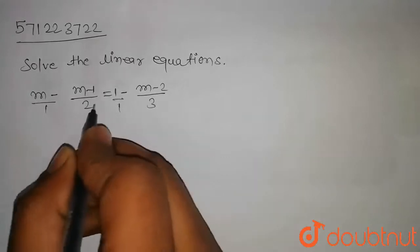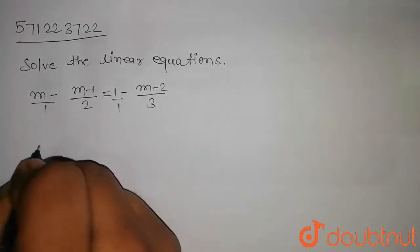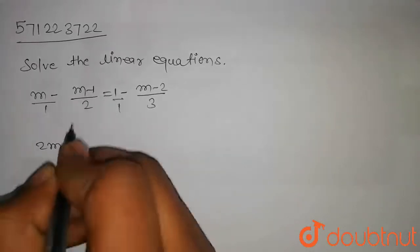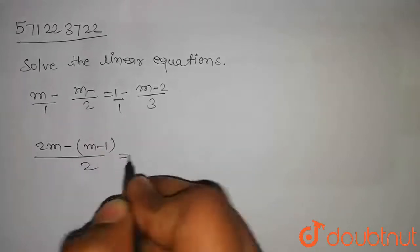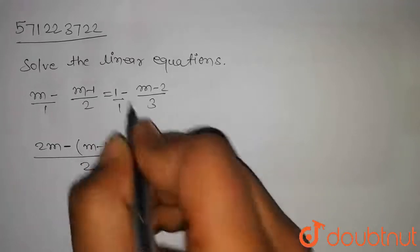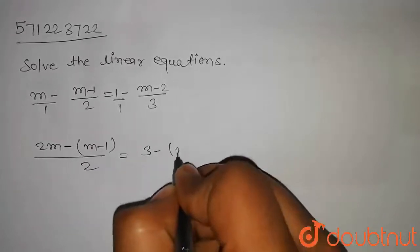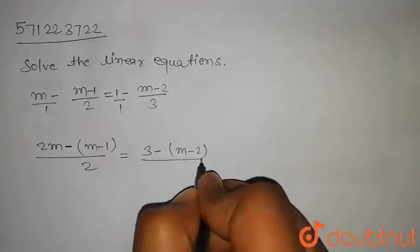So on adding this we get 2 into m minus, m minus 1 upon 2, will be equal to 3 minus m minus 2 by 3.